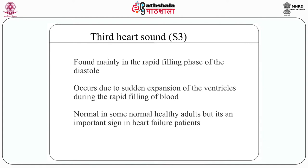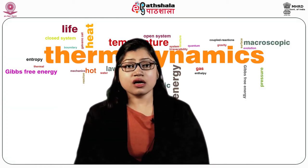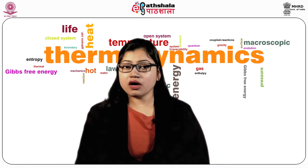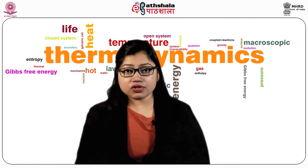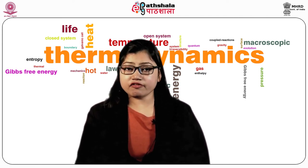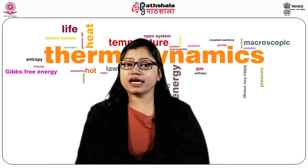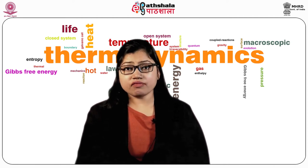Now the third heart sound S3. It is mainly seen in the rapid filling phase of the diastole. The main reason for the genesis of S3 is the vibration set in the ventricles due to sudden expansion of the ventricles during the rapid filling of blood. It is also a low frequency sound. The fourth heart sound S4 is found in the late diastole phase just before the origin of the first heart sound. It is produced mainly by vibrations generated in the expanding ventricles during the atrial contraction. The fourth sound mainly shows ventricular distensibility.